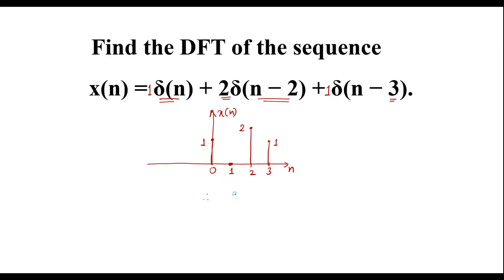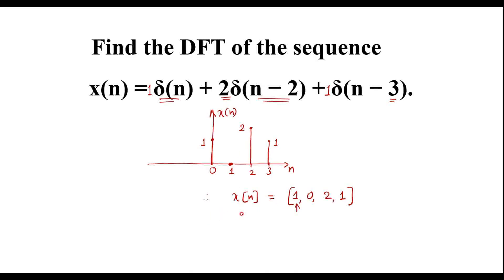Therefore, I can write x(n) as the sequence {1, 0, 2, 1}, where the arrow indicates n = 0. This is the x(n) sequence. Now we need to find the discrete Fourier transform of this x(n).